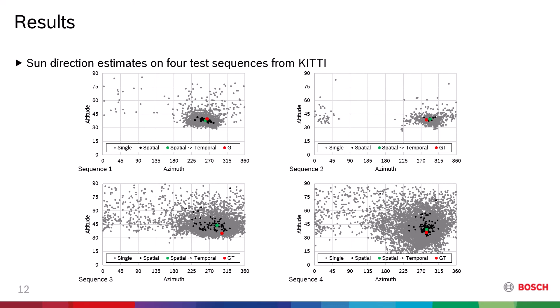For the KITTI dataset, we can further extend the lighting estimation to the temporal domain. To demonstrate the accuracy gain obtained through our pipeline, we plotted the sun direction estimates of each step for four test sequences. In the plot, all predictions are registered to a common coordinate frame using the estimated camera ego motion.